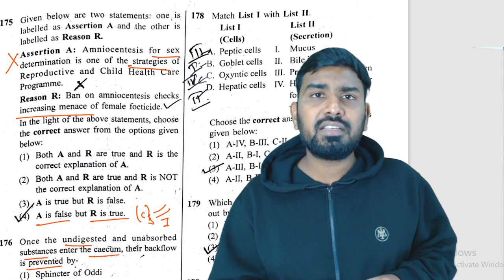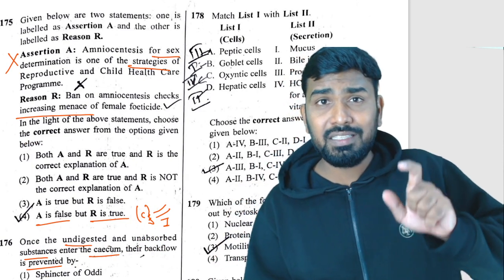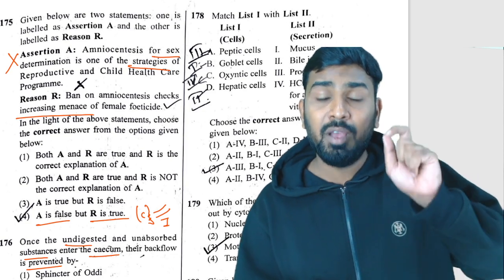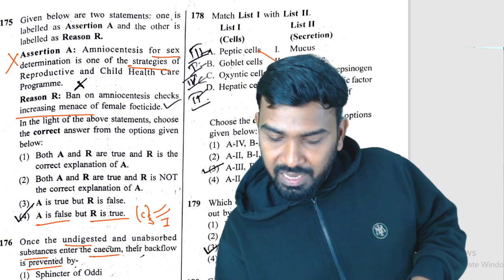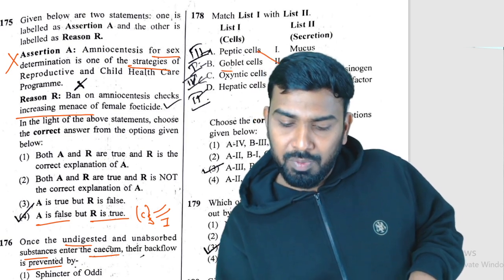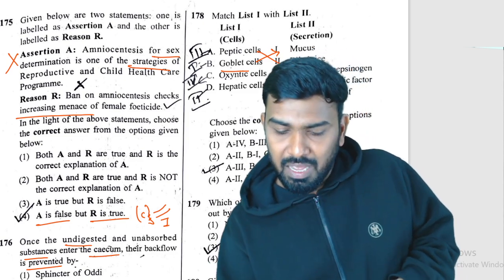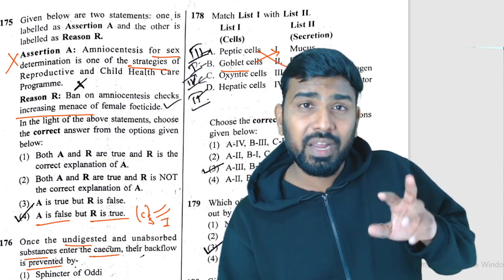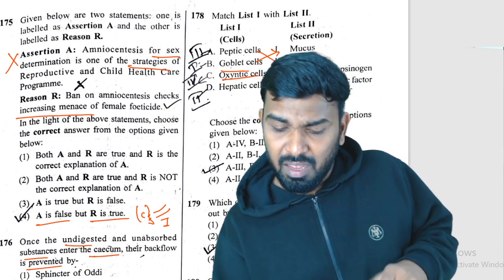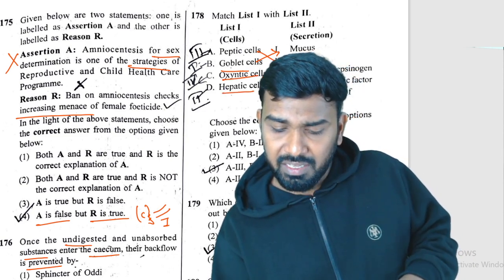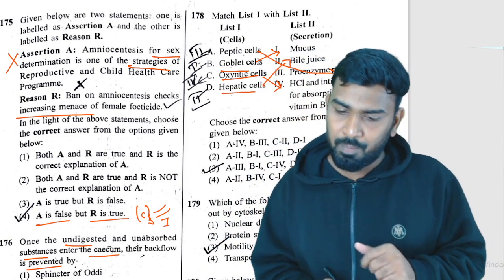Question 178: peptic (chief) cells secrete pepsinogen. Goblet cells secrete mucus. Oxyntic (parietal) cells secrete HCl. Hepatic cells (liver cells) — bile secretion. Match complete for Q178.